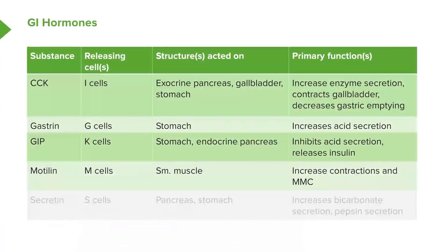Motilin is released by M cells and this increases contractions of the various smooth muscle. It also increases what are called migrating motility complexes that help move foodstuff from the top of the GI system down to the bottom, helping move foodstuff along the GI tract.